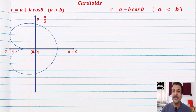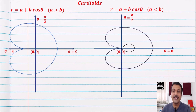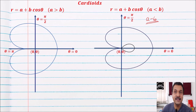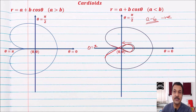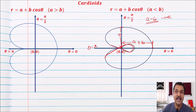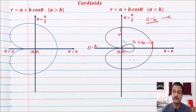For r = a + b cos θ where a < b: when θ = π, r = a − b, which is negative since a < b. A negative value means the curve goes in the opposite direction, creating a inner loop. When θ = 0, r = a + b; when θ = π/2, r = a; when θ = π, r = a − b (negative), forming this loop.